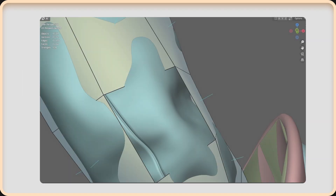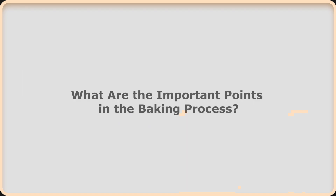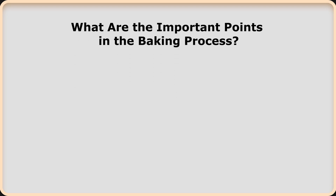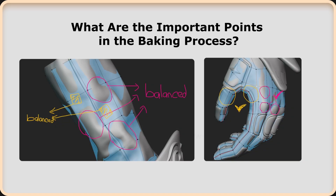The keyword here is the term 'normal.' What are the important points in the baking process? The topology of the low polygon model, the UV map, and the distances between high poly and low poly surfaces — the similarity of these distances between the surfaces of the low polygon model and the high polygon model to which the model details will be transferred — reduces the problems you will encounter in the bake process.